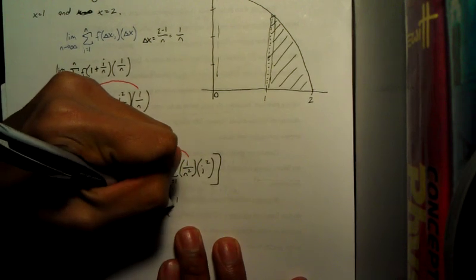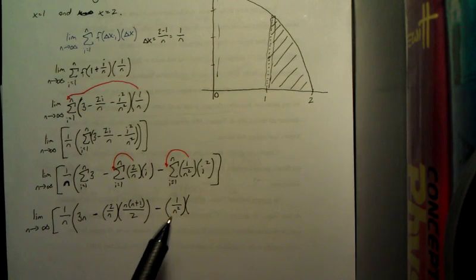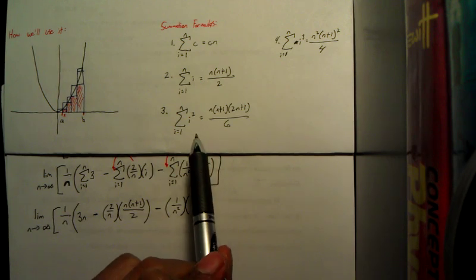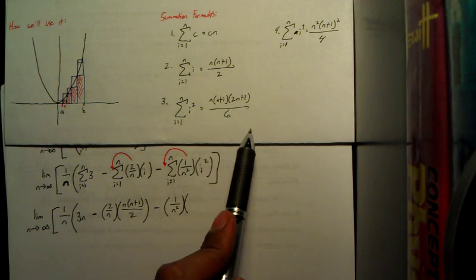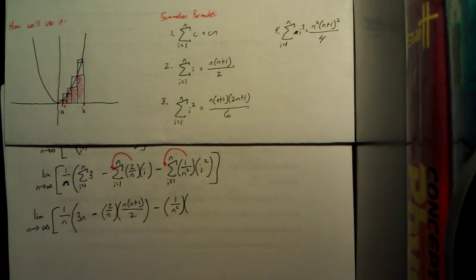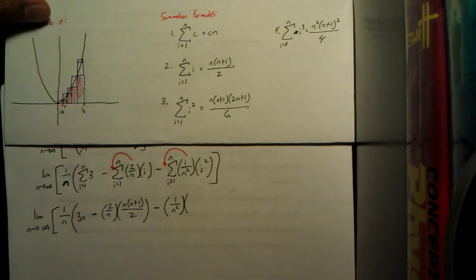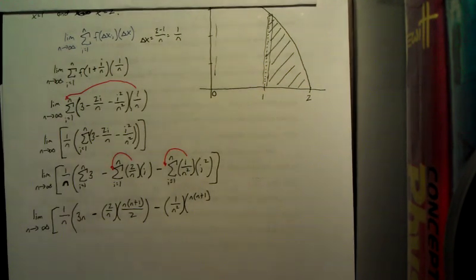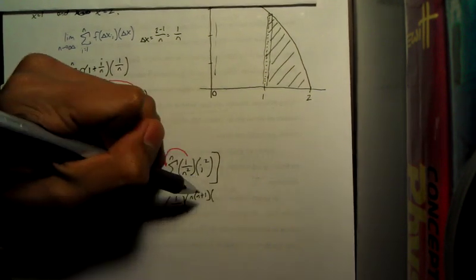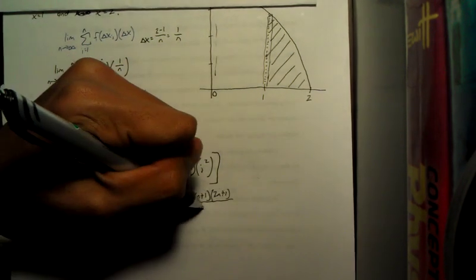And so we have 1 over n squared times, from those summation formulas, I'll just show them one more time, i squared is going to be this formula right here. And notice how these also get rid of that summation sign when you do the substitution.